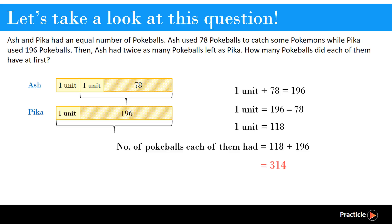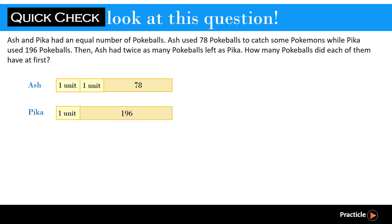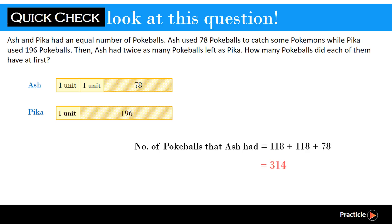But is it really correct? We should always do a quick check. Since we found that Pika had 314, and we know that Ash and Pika had the same number of pokeballs, we can do a quick check for Ash instead. From our model, we can see that Ash has 2 units plus 78 pokeballs. So we simply write it down: Ash has 118 plus 118 plus 78 pokeballs. If you do the calculation, you realize it's actually the same number, which is 314. That means we got the correct answer.